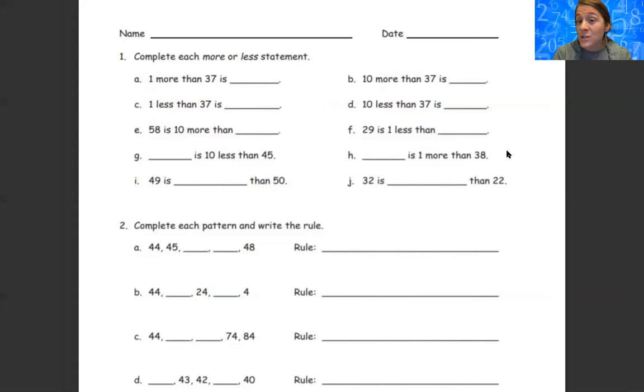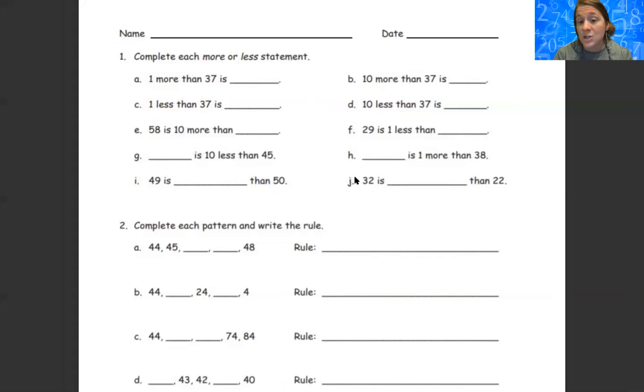We're going to go ahead and look at some of this together. So for this top part I'm actually going to switch screens and share another screen with you that's going to explain these. We're going to go A, B, C, D, E, F together and then you guys are going to do G, H, I, and J on your own, and then we'll come back to this page and do section two together.